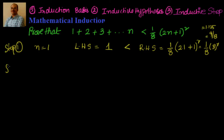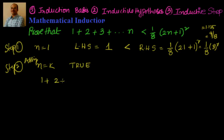The second step is to assume that the statement holds true for n equal to k. Assuming n equal to k is true, the statement looks like: 1 plus 2 plus 3 up to k terms is less than 1/8 times (2k+1) whole square. We haven't done anything other than substituting n with the value k.